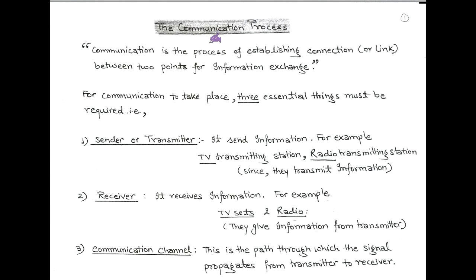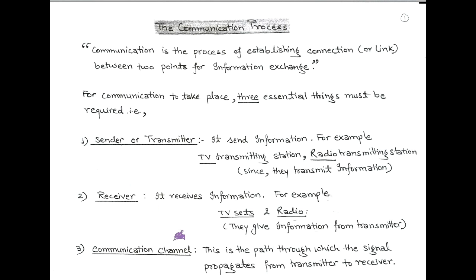Our topic is the communication process. Communication is a process of establishing connection or link between two points for information exchange. So communication is a process in which information is exchanged between two points. These two points may be a transmitter and receiver, and between a transmitter and receiver there is a channel through which information is exchanged.